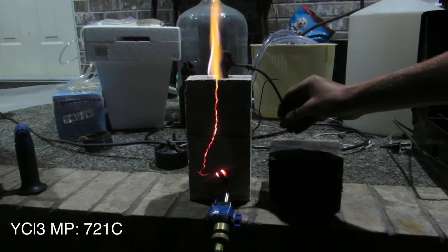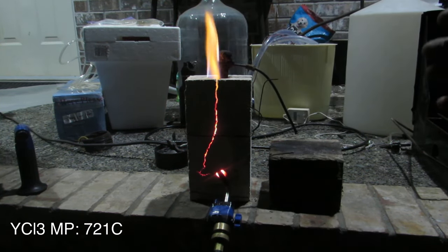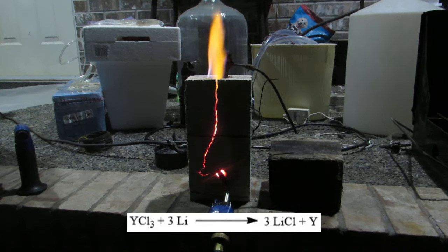The yttrium chloride melts around 721 degrees Celsius, so as the yttrium chloride melts, it reacts with molten lithium to produce yttrium metal and lithium chloride.